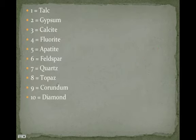Here's a listing of minerals from 1 through 10 on the Mohs scale. We don't have all of these in our classroom — we do not have a diamond. We do have talc (1), gypsum (2), calcite (3), fluorite (4), apatite (5), feldspar (6), quartz (7), topaz (8), and corundum (9). We just don't have a diamond.